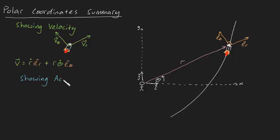If we wanted to show the acceleration vector, it will have a component ar in the r direction and atheta in the theta direction. This can be expressed mathematically as a is equal to r double dot minus r theta dot squared er plus r theta double dot plus 2r dot theta dot etheta.